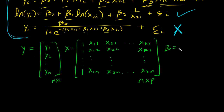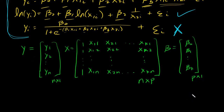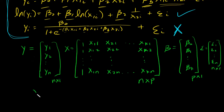The beta vector is beta naught, beta_1, all the way through beta_k — this is a p by one vector, where p is k plus 1 for the intercept. Then lastly, epsilon is all of my model errors stacked on top of each other, and this is n by one. Using this matrix notation, I can write my model compactly as y equals X beta plus epsilon.